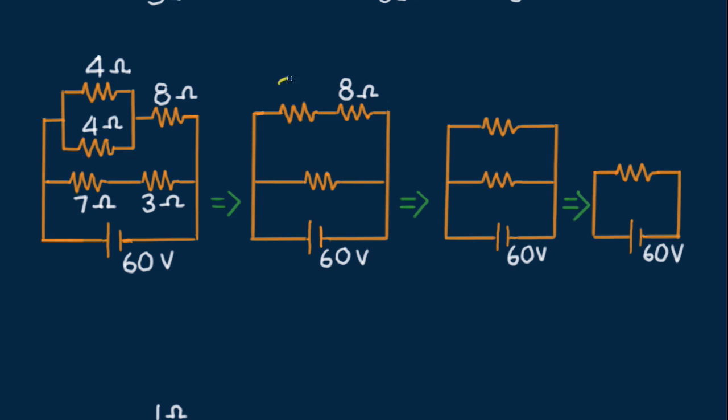The pair of 4 ohmers gives 2 ohms, and the 3 plus 7 ohms in series add to 10 ohms. And we have a pair of 10 ohmers in parallel, so we get 5 ohms. Now, what's the current drawn from the battery? Well, from Ohm's Law...